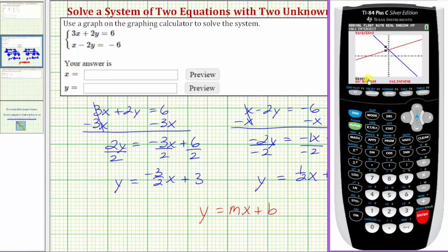And now it's asking us to guess, which means the calculator wants us to move the cursor closer to the point of intersection, which really isn't required. But let's go ahead and do that. We'll arrow right until we're very close to that point of intersection. Press enter. And now the cursor is on the point of intersection, and the ordered pair for that point is down here.